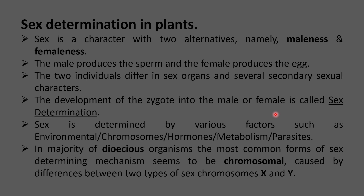Just like any other trait or character, sex is also a character with two alternatives — maleness and femaleness. The male produces sperm or pollen and the female produces the egg. These two individuals differ in sex organs: the male has stamens and the female has carpels. They also differ in several secondary sexual characters, meaning differences in structure other than the sex organs.